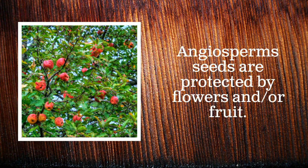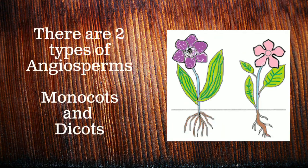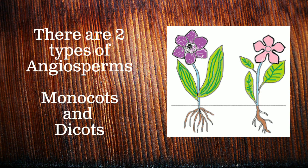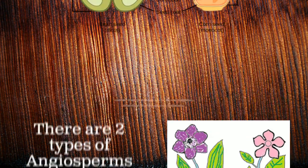Another type of vascular plant that reproduces using seeds are known as angiosperms, and those seeds are protected by flowers and/or fruit. There are two types of angiosperms: monocotyledon, or monocots, and dicotyledons, or dicots. Let's look at some of the differences between the two.